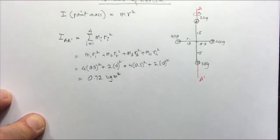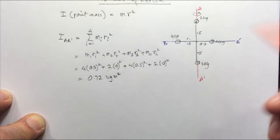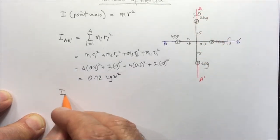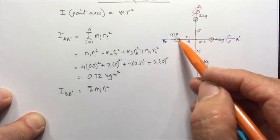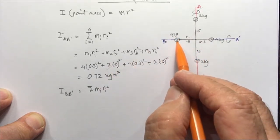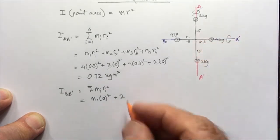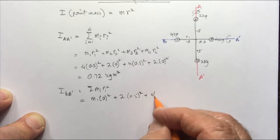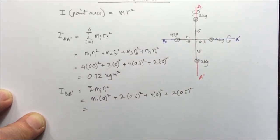Now, instead of axis A-A prime, consider axis B-B prime along the other rod — the system spins about this line instead. The moment of inertia about B-B prime is again the sum of M_i R_i squared. Now the 4 kg mass (M1) is on the axis so its term is 0. M2 is 2 kg at 0.5 meters squared, M3 is on the axis so it's 4 times 0, and M4 is 2 kg at 0.5 meters. Solving gives 1.00 kilogram meter squared.